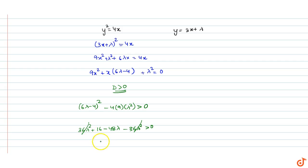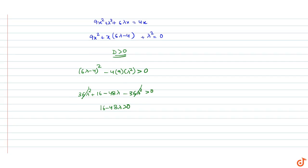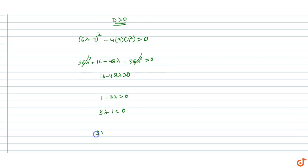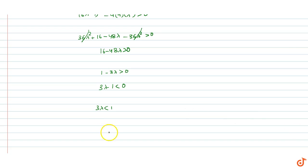They cancel out, we get 16 minus 48 lambda is greater than 0. That is 1 minus 3 lambda is greater than 0. That would give us 3 lambda minus 1 is less than 0. That is 3 lambda is less than 1 and that would give us lambda is less than 1 by 3.